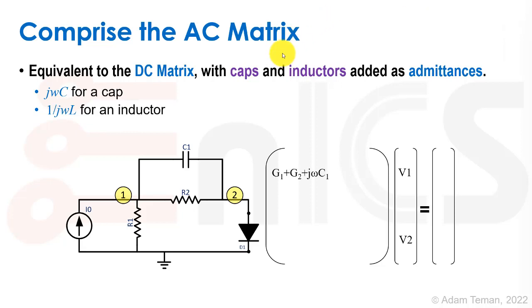Look at R1 at node one, it's connected to R1, R2, and C1. So we get G1, G2, and j omega C1 at the first diagonal. At the second diagonal, we have R2 and C1, so we get G2 and j omega C2, but it's also connected to the diode. We're going to take the guess of what the admittance of the diode is, which is Gd. So we have Gd plus G2 plus j omega C1. Between nodes one and two, we have R2 and j omega C1, which we put over here.